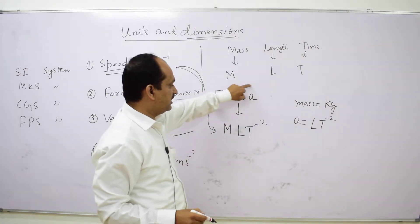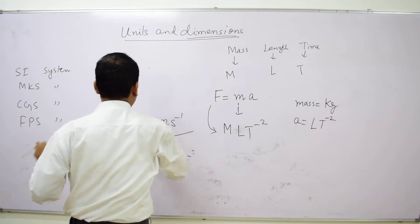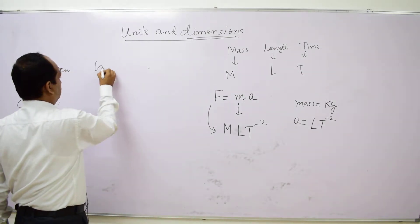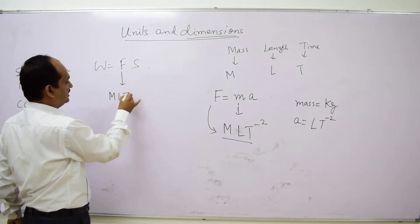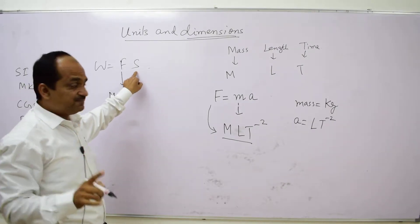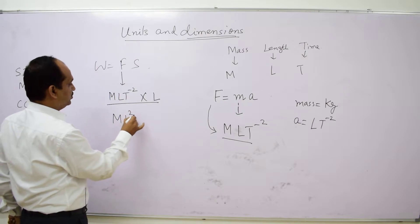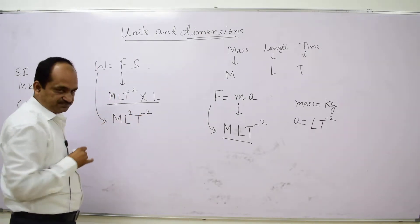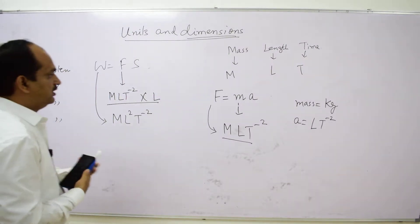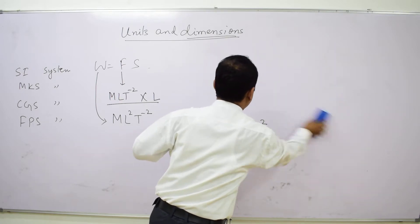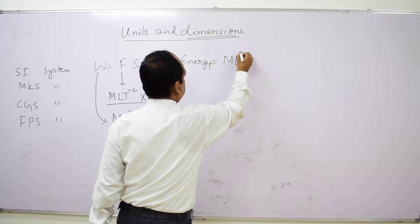We calculated the dimension of force as M L T minus 2. Since work equals force multiplied by displacement, and displacement is a length, we multiply M L T minus 2 by L to get M L² T minus 2. This is the dimension of work.